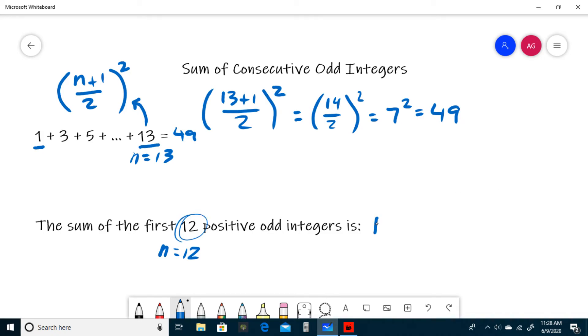12 squared, same thing as 12 times 12 is 144. It's that easy. So the sum of the first 6 positive odd integers, 6 times 6 is 36. Sum of the first 13 positive odd integers is just 169, 13 times 13.